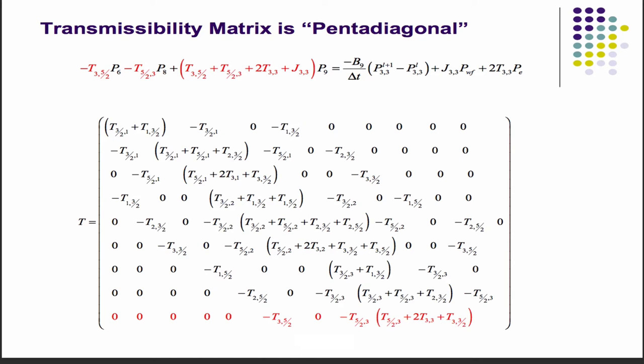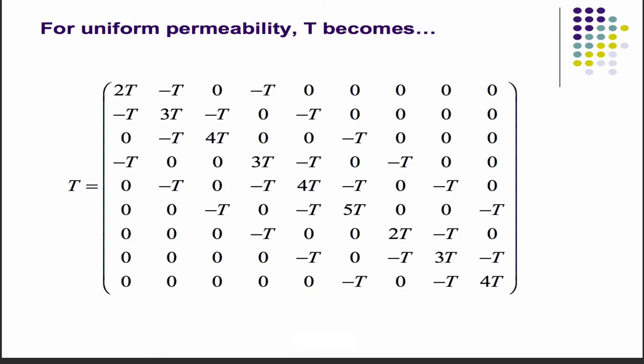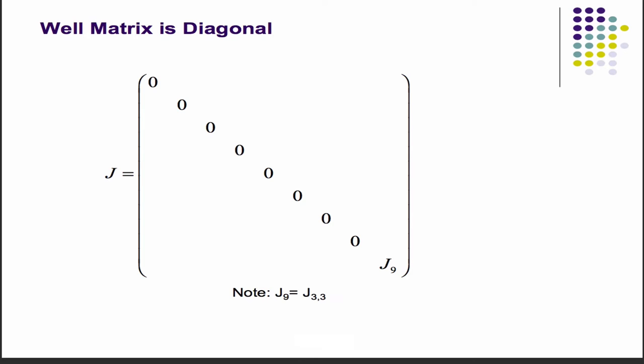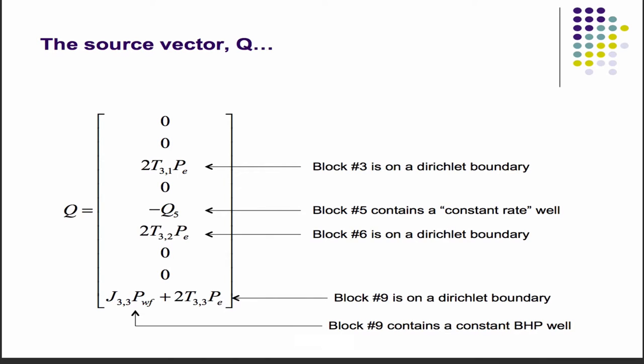That's what the transmissibility matrix looks like. You don't see a J here because this is just the transmissibility matrix, and we have a separate matrix for J. For uniform permeability, you get this. If it's homogeneous, then you get that structured pattern that you can verify. The accumulation is easy. And then you have this J matrix that's going to have that productivity index in the last entry associated with that bottom hole pressure well in that entry in the ninth grid block. Your Q vector, you have the three 2TPBs for the three blocks on the right boundary that have constant pressure boundary conditions. You have the constant rate well in Q5, and you have the constant bottom hole pressure well in Q9. That's your Q matrix.